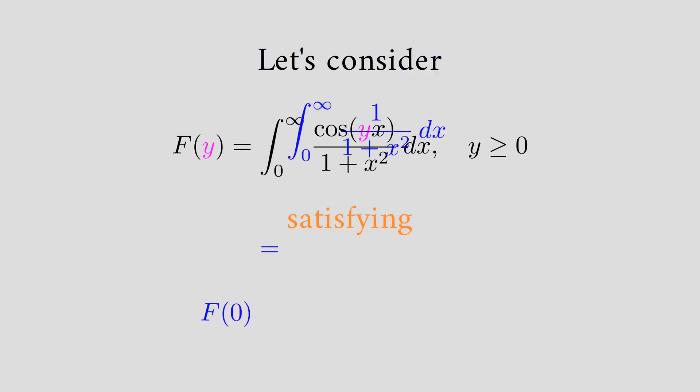In this case we can see that if we put y equals zero, cosine of zero is one, and F of zero is going to equal the integral of one over x squared plus one between zero and plus infinity.